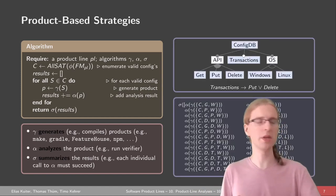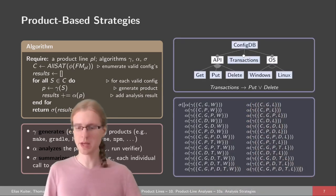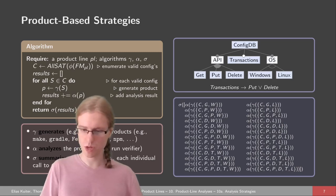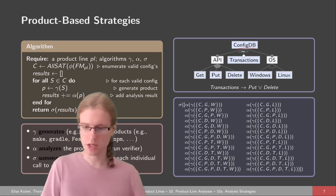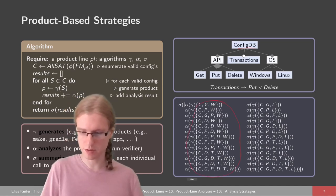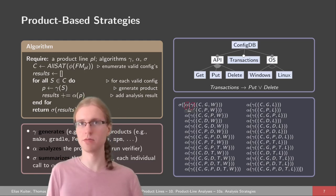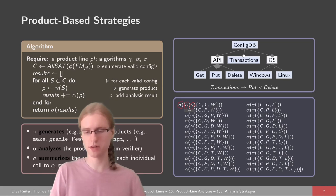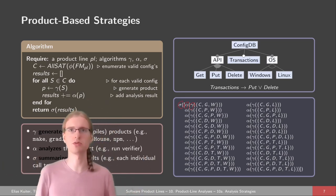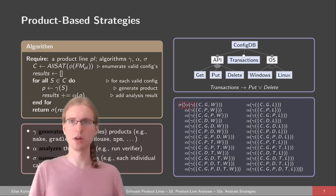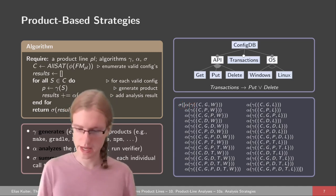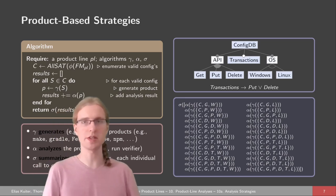That is also the potential problem. If we write this down for a configurable database example, we have all of these products — for example, a configurable database with get access on Windows. Each of these products has to be generated, compiled, and also analyzed and verified. Then we have to summarize all these results into one kind of summary boolean or similar. And these are already many products for just such a small example.